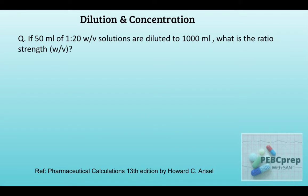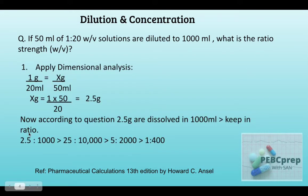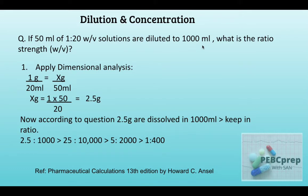Next question: if 50 milliliters of a 1:20 weight-by-volume solution are diluted to 1000 milliliters, what is the ratio strength? First, we solve with dimensional analysis. If we have one gram in 20 milliliters, how much will we have in 50 milliliters? We get 2.5 grams. Now, according to the question, 2.5 grams are dissolved in 1000 milliliters.